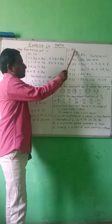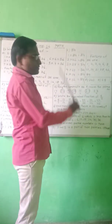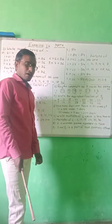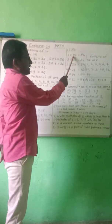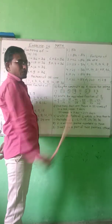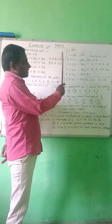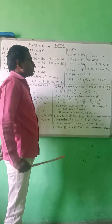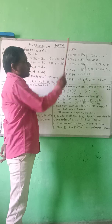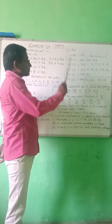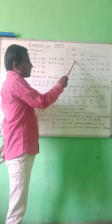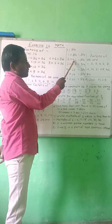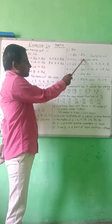Next example: 84. Again, we start from 1, so 1 multiplied by 84 is equal to 84. Then next, take 2. In the 2 times table, 8 and 4 are present: 2 twos are 4, so 2 multiplied by 42 is equal to 84.